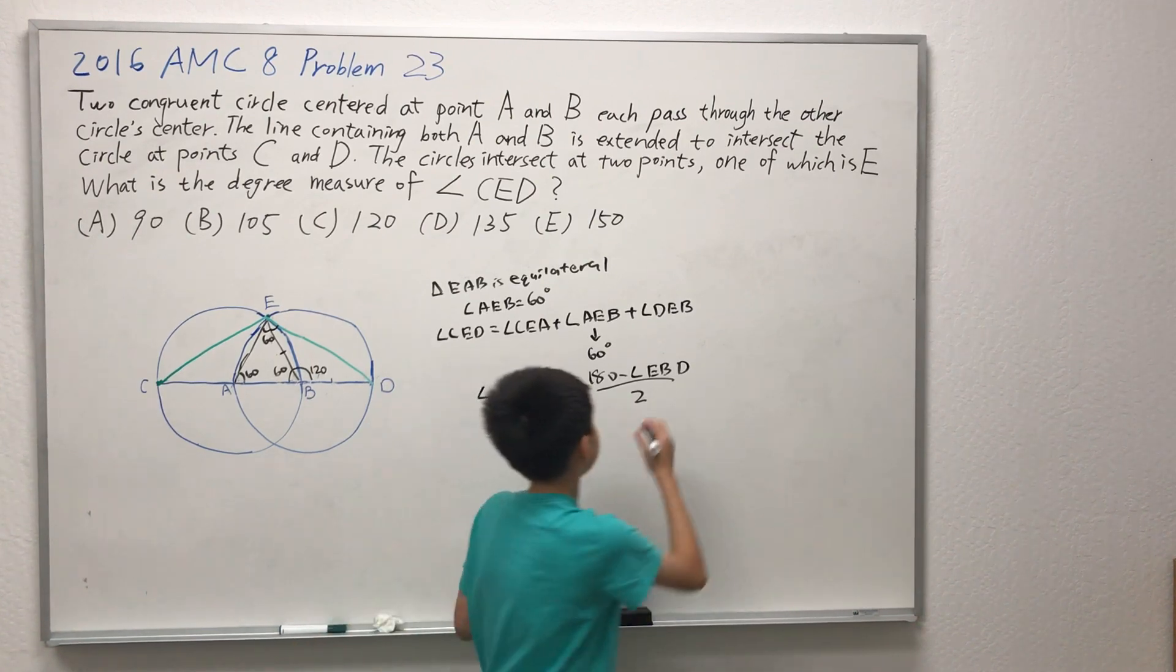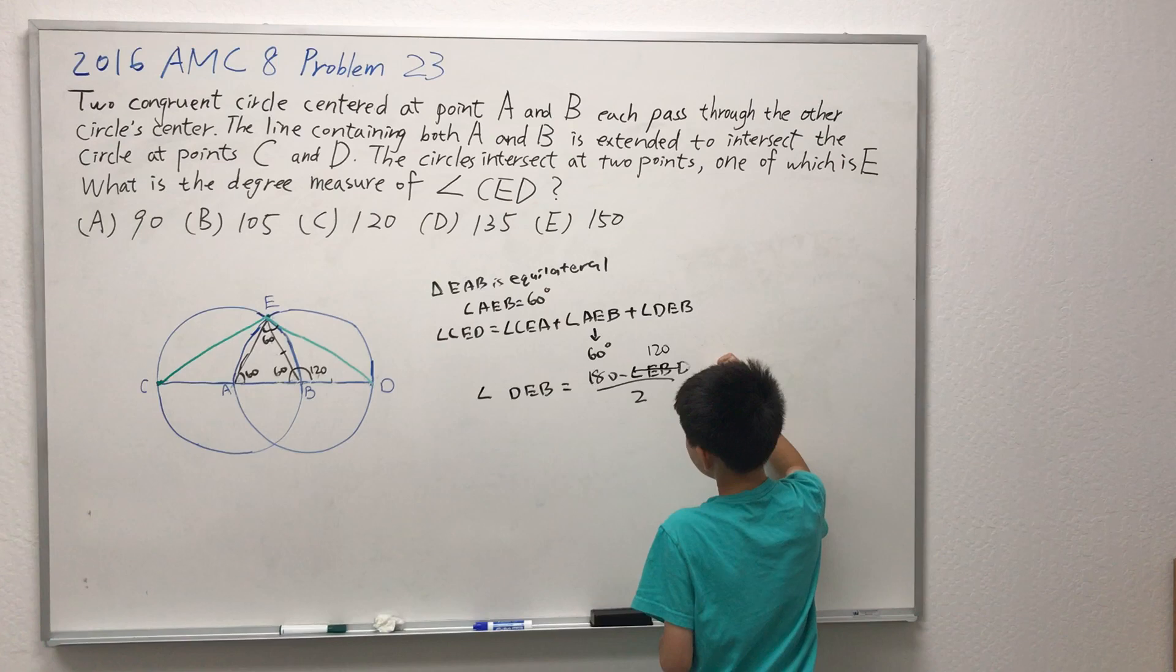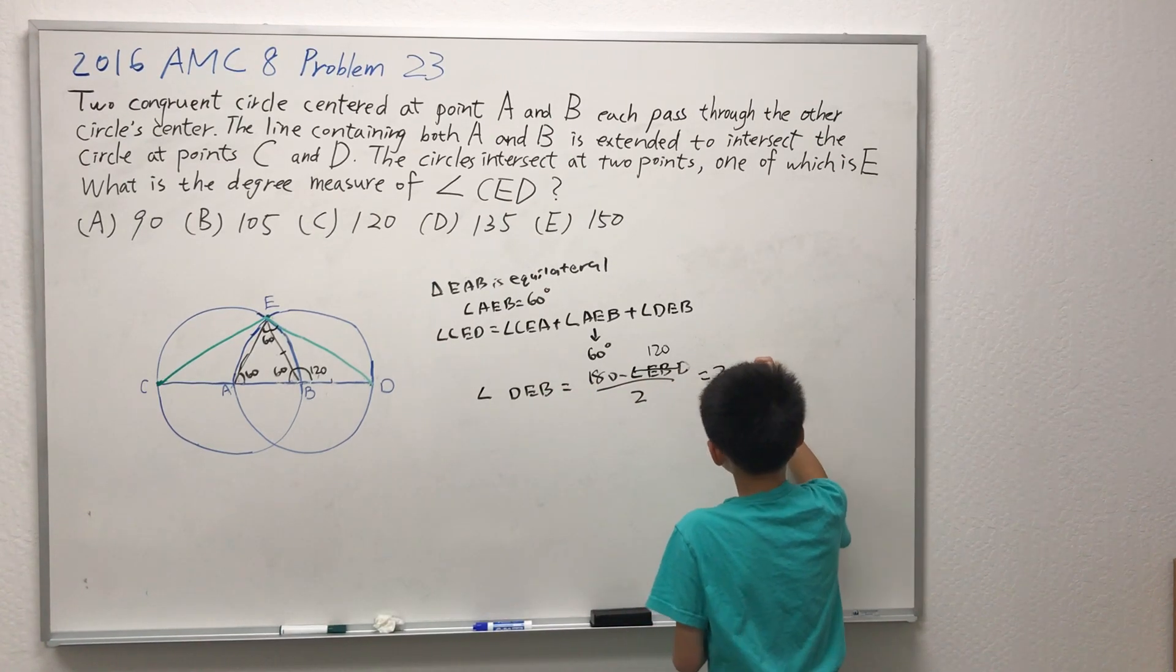We can substitute the value of angle EBD into this equation, which will get you angle DEB is 30 degrees.